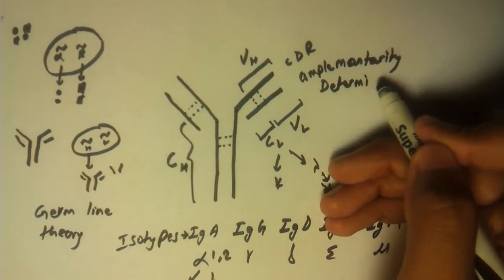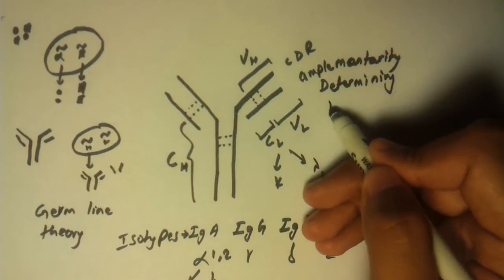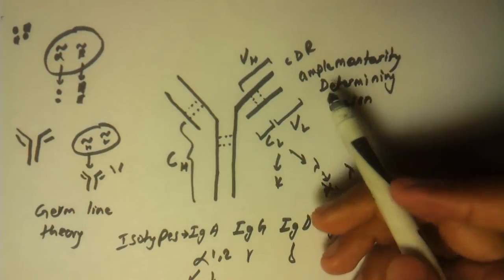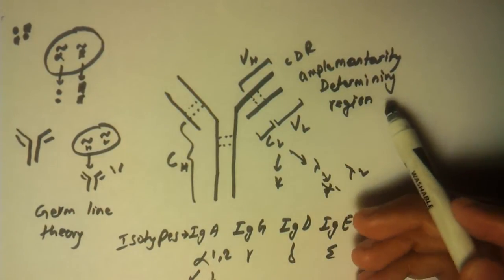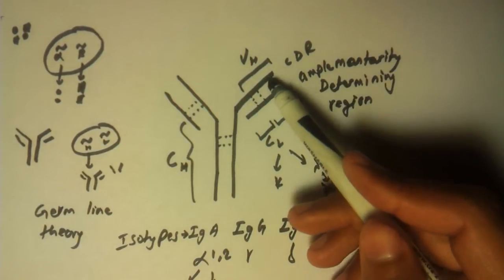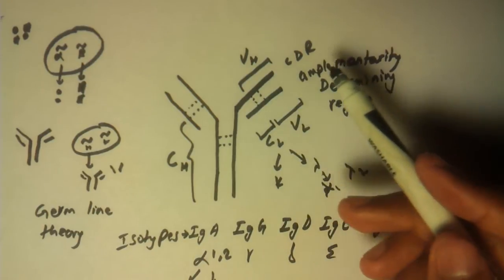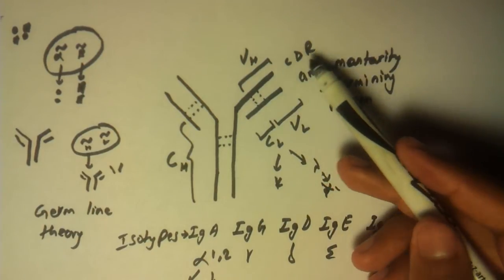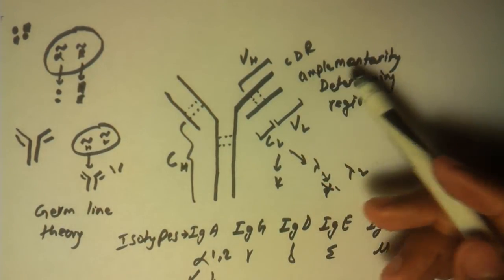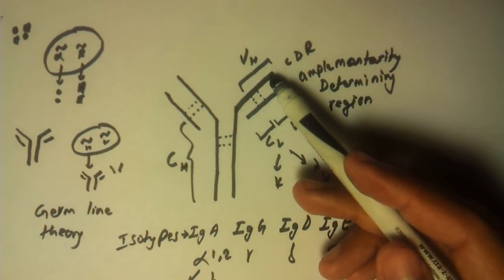The name complementarity determining region, or CDR, is because this is the part that's going to be complementary to the part in antigen. So we call it CDR, or it's also called hypervariable region.